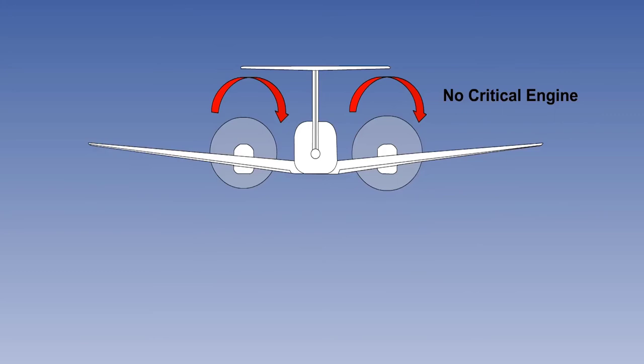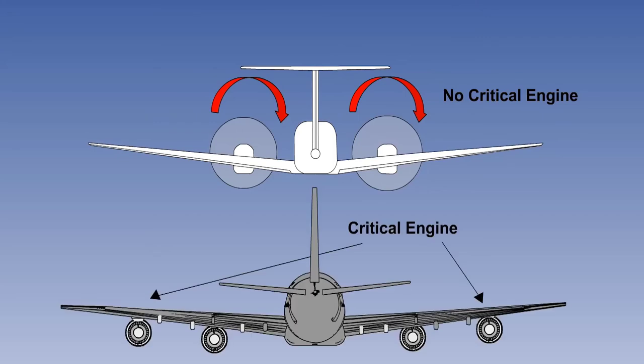Bigger turboprop aircraft, such as the King Air and larger, will have co-rotating propellers turning in the same direction. In the case of four engine jets, either outboard will be a critical engine.